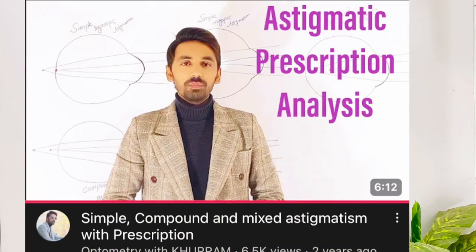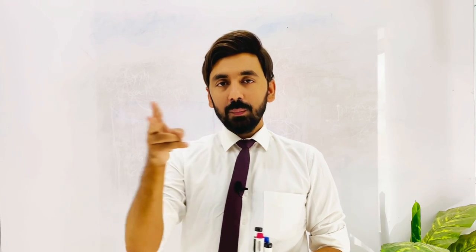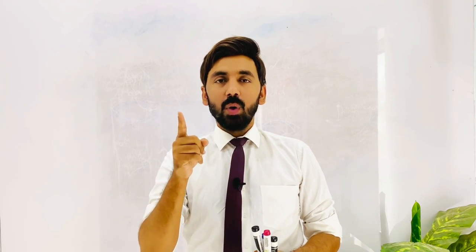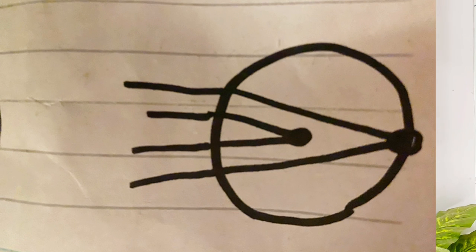We have discussed the clinical types of astigmatism in detail. Let's recall: we discussed simple myopic astigmatism and simple hyperopic astigmatism. In simple myopic astigmatism, one focal point is formed on the sensitive layer of the retina and one focal point is formed in front of the retina. In simple hyperopic astigmatism, one focal point is formed behind the retina and one is formed on the sensitive layer of the retina.